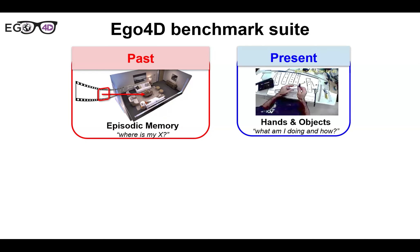The next set of tasks deals with the present, particularly hands and objects. The data is very rich in intricate hand-object manipulation, which has potential utility for translating into dexterous robot learning. The hands and objects task asks: what am I doing, how am I doing it — including the camera wearer transforming or manipulating objects.